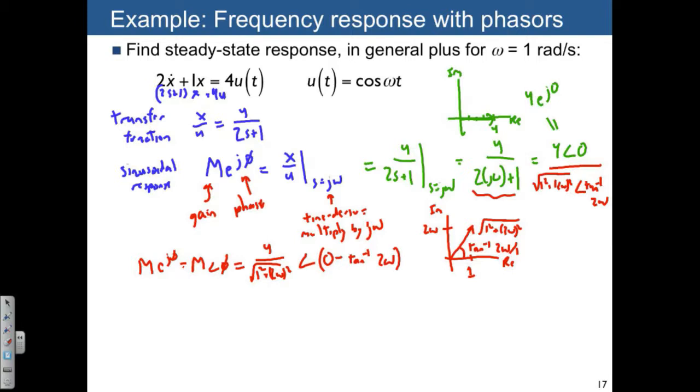This tells us that the sinusoidal response x(t) is going to be equal to M·cos(ωt + φ), where we have 4/√(1 + 4ω²) times cos(ωt - arctan(2ω)).